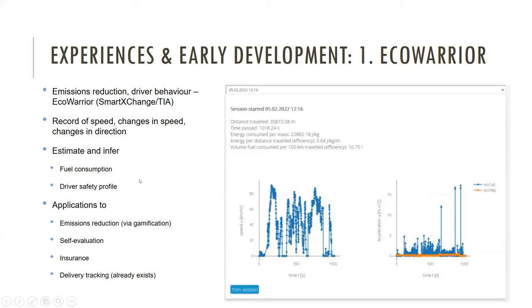There are many applications of that kind of analysis. For emissions reduction, if we can estimate fuel consumption, we can relate the amount of fuel consumed to emissions produced and create incentivization aspects to influence emissions reduction. If you show drivers their fuel consumption, that can influence a reduction. Vehicles already have fuel consumption displays, but they are averaged out. Having access to such data allows you to gamify sub-routes in travel and incentivize behavior change.